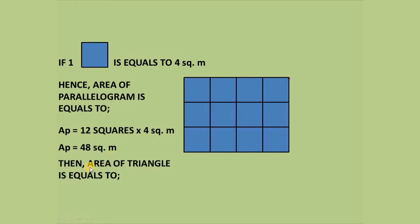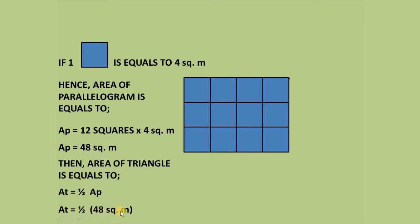Then, the area of the triangle is equal to one half of the area of the parallelogram. So the area of triangle equals one half times 48 square meters, which gives us an area of triangle equal to 24 square meters.